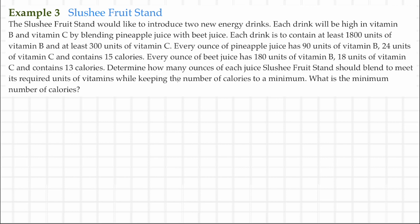We want to keep the number of calories to a minimum, so this is going to be a minimization problem. We're going to use the letter C to designate minimization and determine the objective function. Our minimization is going to be dependent upon the number of calories — 13 calories from the beet juice and 15 calories from the pineapple juice. If we think of the pineapple juice as X, then we could say 15X calories.